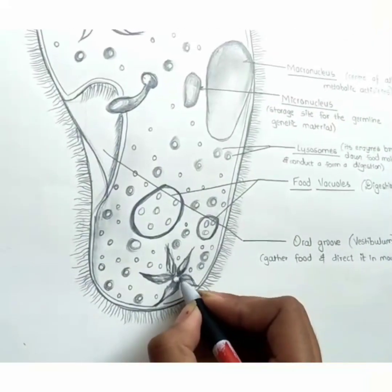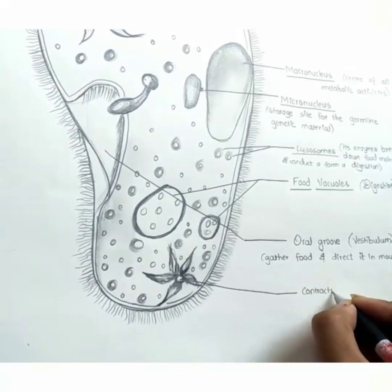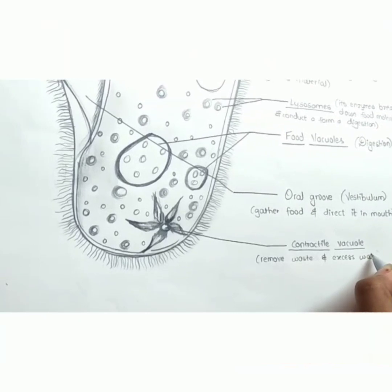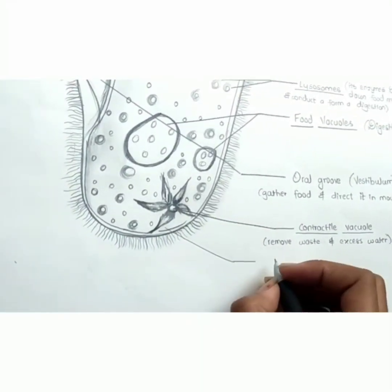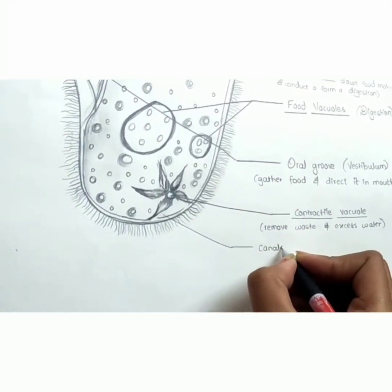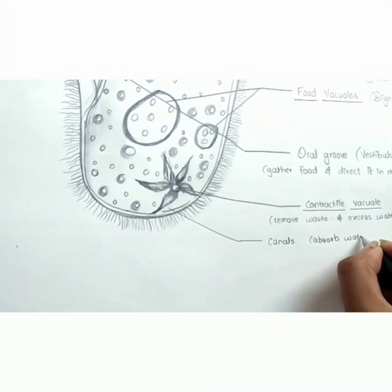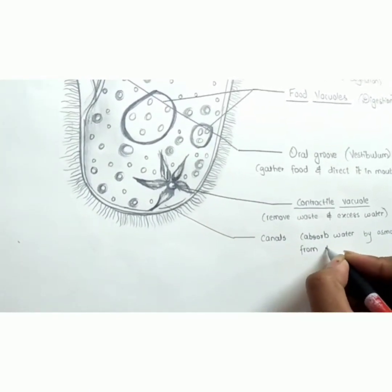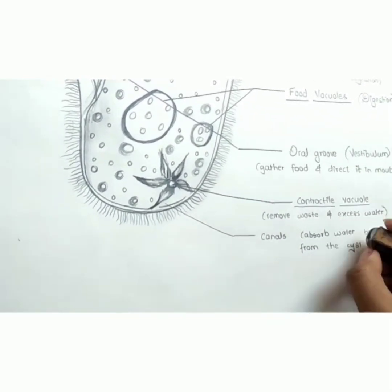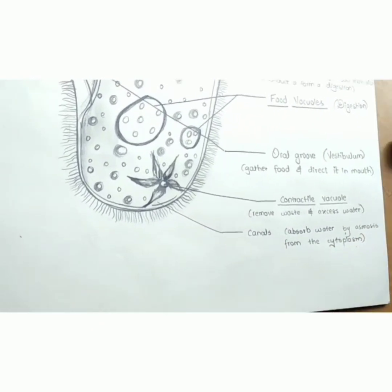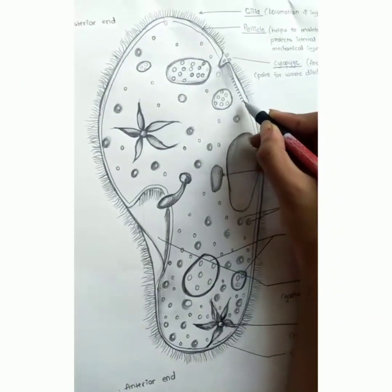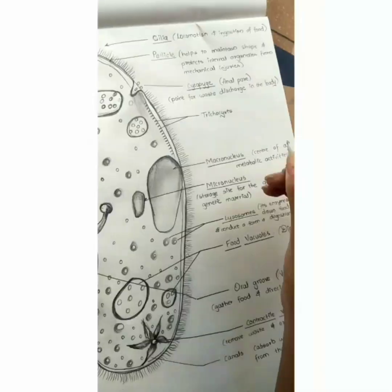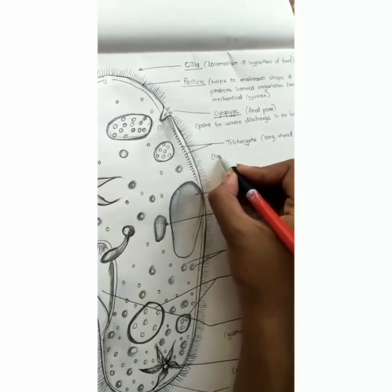Now this flower shape — the center is called the contractile vacuole, which removes waste and excess water. Its petal-like structures are called canals, which absorb water by osmosis from the cytoplasm. Inside there are thread-like structures called trichocysts, which can be ejected in response to certain stimuli.